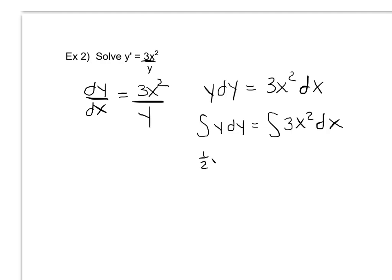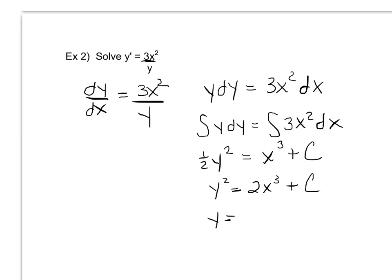Integrating y gives one-half y squared. As I saw in the last example, I'll only have a constant on one side in the end anyway, so I'll hold off putting the plus c on the left and place it on the right with x cubed. If I wanted to solve for y, I multiply both sides by 2, giving y squared equals 2x cubed plus c. Taking the square root of each side, remembering my plus or minus, gives the general solution.